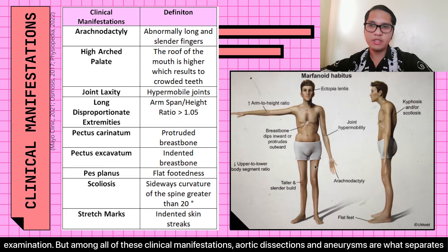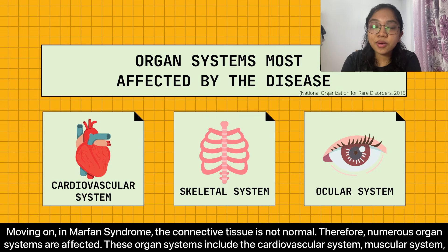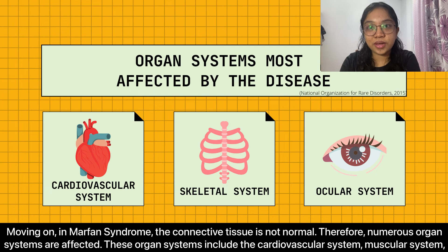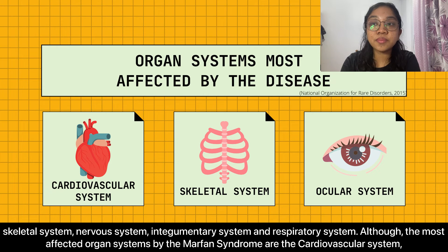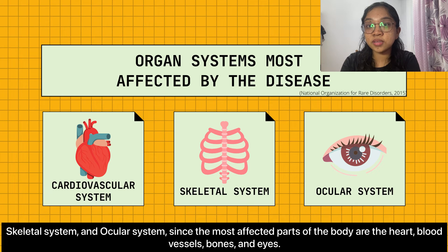Among all of these clinical manifestations, aortic dissections and aneurysms are what separates Marfan Syndrome from other disorders related to the overgrowth of limbs. In Marfan Syndrome, since connective tissue is not normal, numerous organ systems are affected. These include the cardiovascular system, muscular system, skeletal system, nervous system, integumentary system, and respiratory system. The most affected organ systems are the cardiovascular system, skeletal system, and ocular system, since the most affected parts of the body are the heart, blood vessels, bones, and eyes.